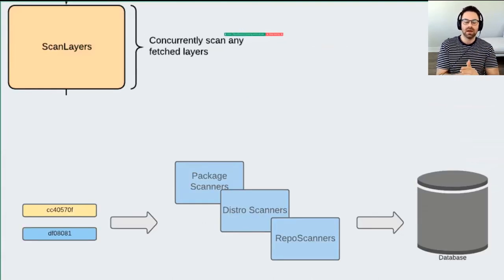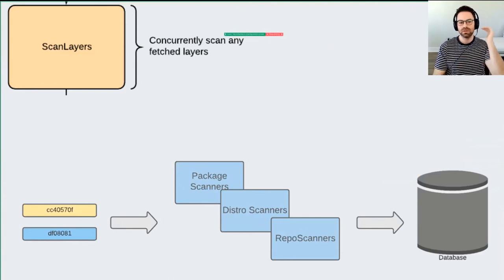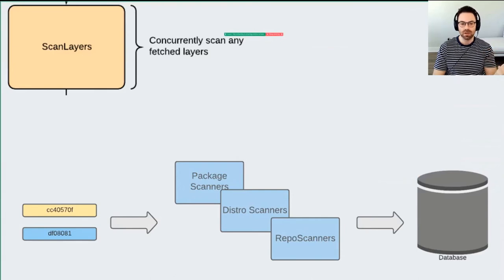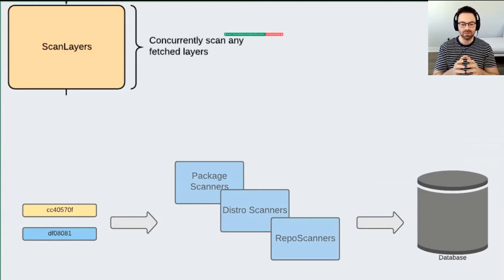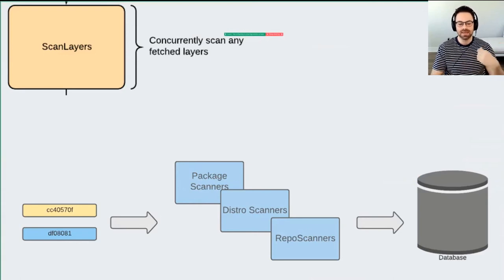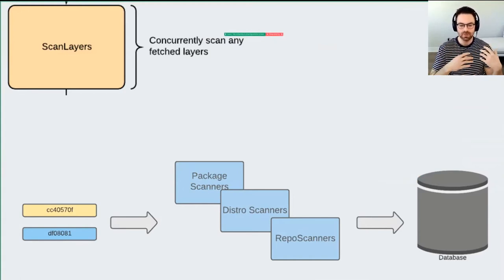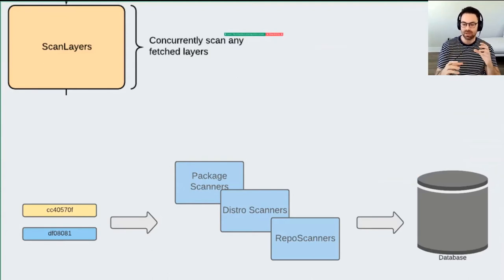Once layers are local on the file system, the next state is scan layers. We take the scanners computed in the check manifest state and do that work. The scanning state takes that list of scanners and concurrently fans out the scanning business logic via goroutines. The controller knows the configured scanners, fans them out, hands each scanner layers, they scan through them, return their contents back to the controller, and the controller writes those contents to the database. This is when we compute what's inside each layer and store partial results per layer.